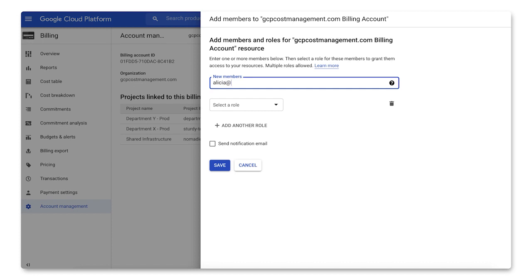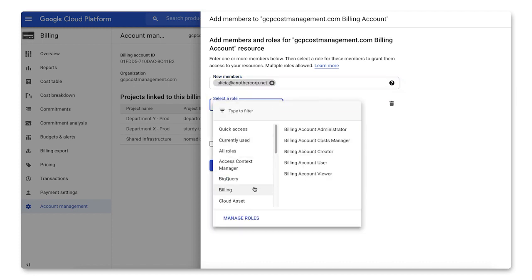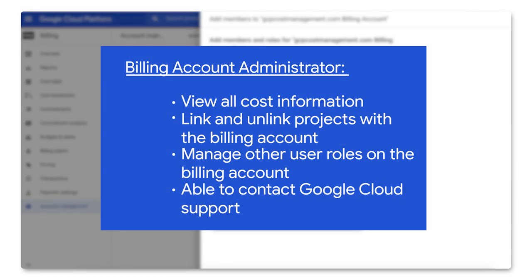Permissions are bundled to form several functional roles. Billing account administrators can view cost information, link and unlink projects from the account, and manage other member roles on the account. They are also the only ones who can contact Google Cloud support if you need help.